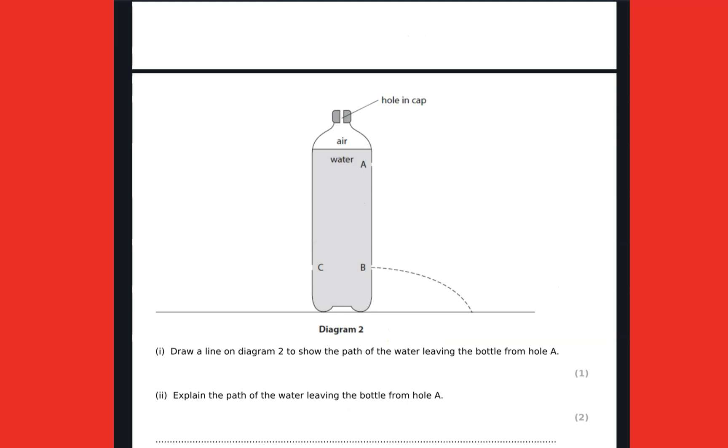The next question here, the examiner was testing whether you understand how pressure varies with depth. We have three holes there: A which is at the top, we have B, and C is at the same level with B. Roman one, we are supposed to draw a line on diagram two to show the path of water leaving the bottle from hole A. Now what you need to remember there is that at A, pressure is least, so water will travel the least distance because the pressure at that given point is less. Pressure in liquids depends on the depth.